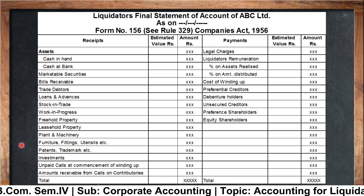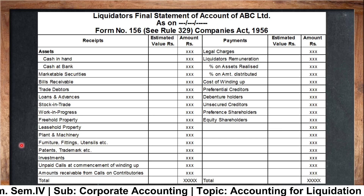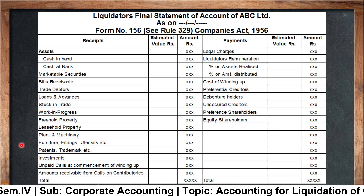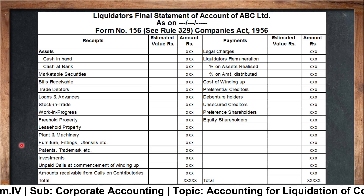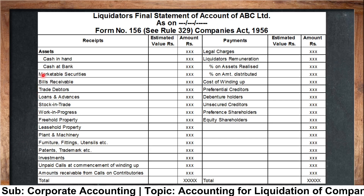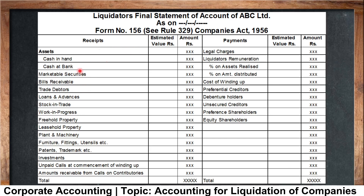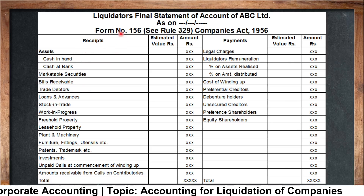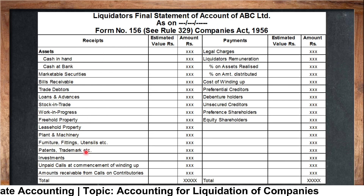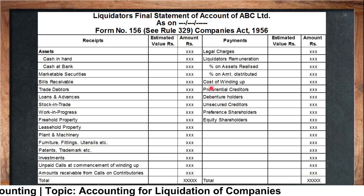Here you can see the Liquidator's Final Statement of Account of ABC Limited as on a particular date. The form is given in Form Number 156 under Rule 309 as per the Companies Act 1956 and 2013. The liquidator has to record the receipts — whatever amount he receives from the sale of assets has to be mentioned on the receipt side — and whatever payments he is going to make are mentioned on the payment side.